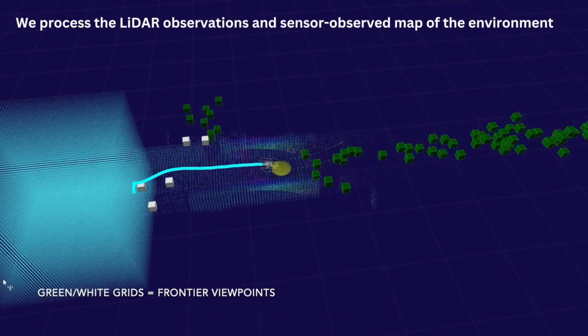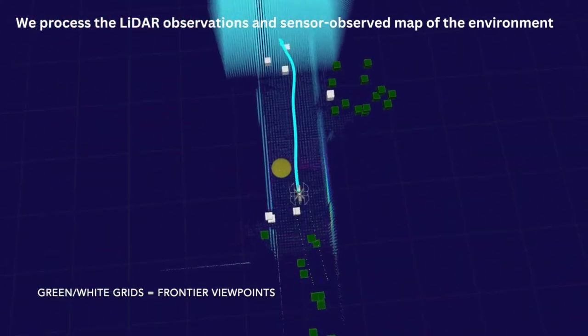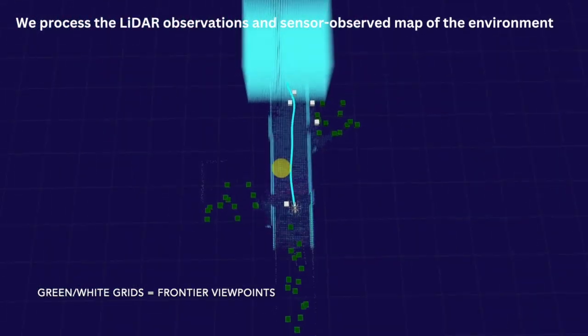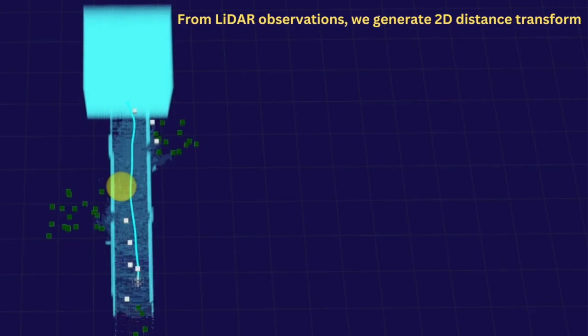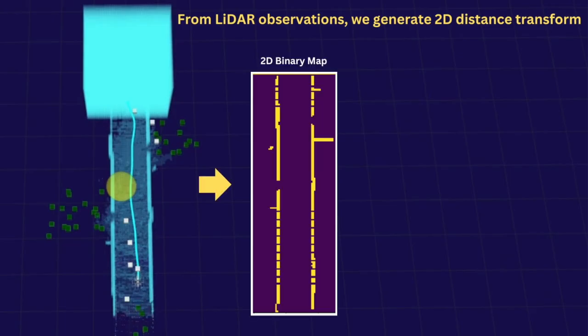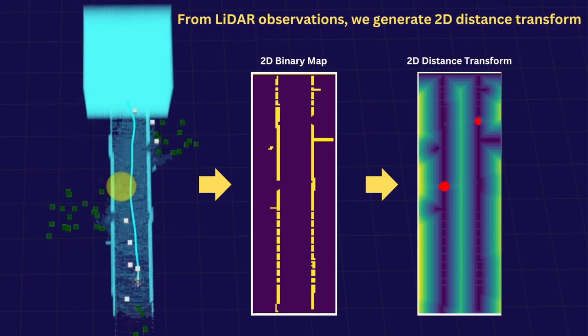In this work, we focus on a LiDAR processing approach, where we process the LiDAR observations and sensor-observed map of the environment. From LiDAR observations, the robot generates a 2D binary map, and then generates a 2D distance transform map from the binary map.